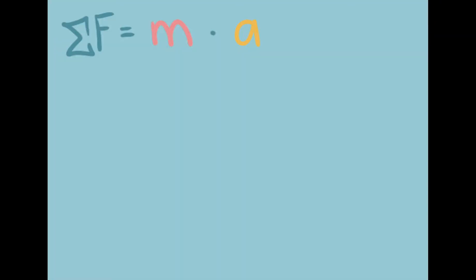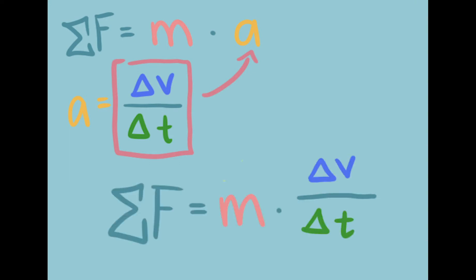Newton's second law states that force is equal to mass times acceleration. Acceleration is equal to the change in velocity divided by our change in time. If we plug in our equation for acceleration into the a value of Newton's second law, we get the force is equal to mass times change in velocity over change in time.